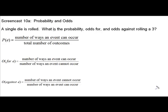We are going to talk first about the probability of finding an event, and then we're going to compare that to finding the odds for an event and against an event. They have many things in common, but there are very important differences as well. The problem we're going to be working on states a single die is rolled. What is the probability, odds for, and odds against rolling a 3?